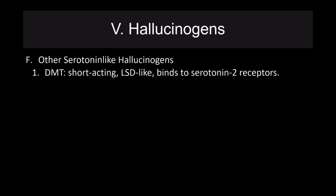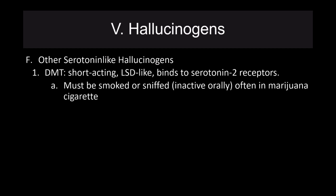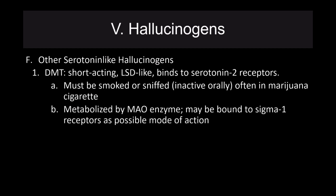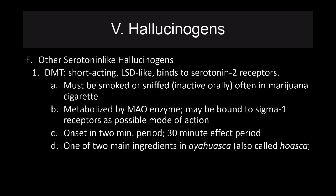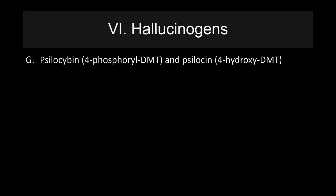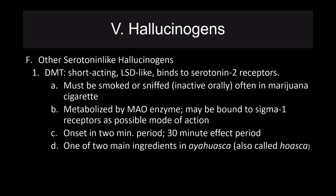Other serotonin-like hallucinogens include DMT, a short-acting version of LSD. DMT must be smoked or sniffed — it is inactive orally — and is often included in marijuana cigarettes. It is metabolized by monoamine oxidase and may bind to sigma-1 receptors. Its onset is rapid, within two minutes, with about a 30-minute period of effect. It's one of the two main ingredients in ayahuasca, an herbal compound for which people travel to Central and South America.